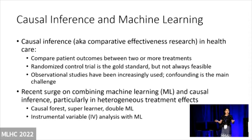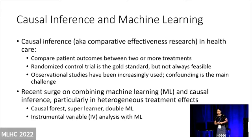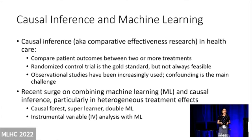As Fisher told us 100 years ago, the randomized control trial is the gold standard. If you can do that, you don't need to do causal inference. But obviously, randomized trials are not always feasible. So in recent years, observational studies have been increasingly used.